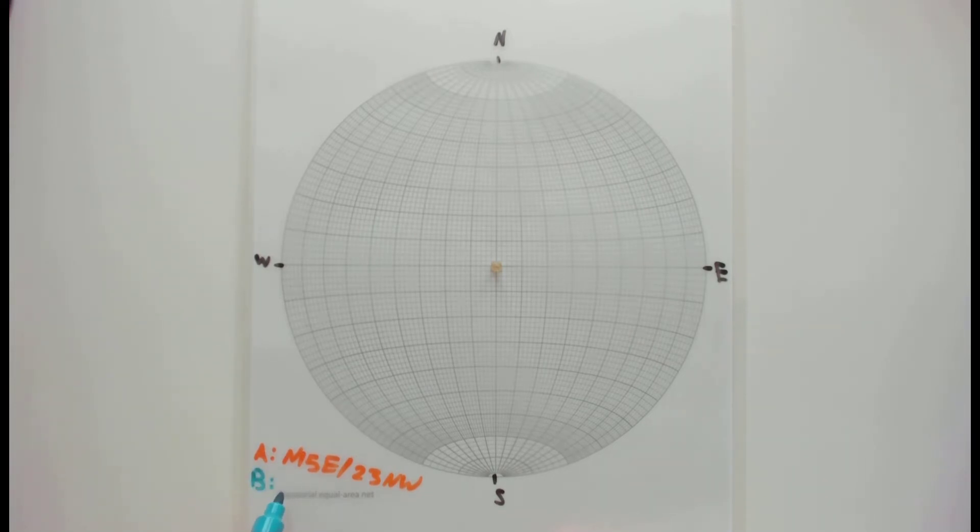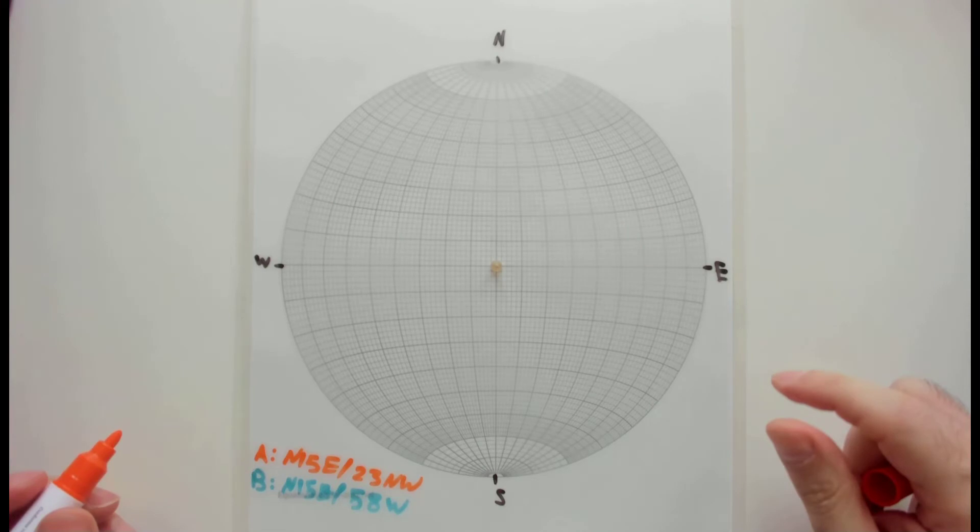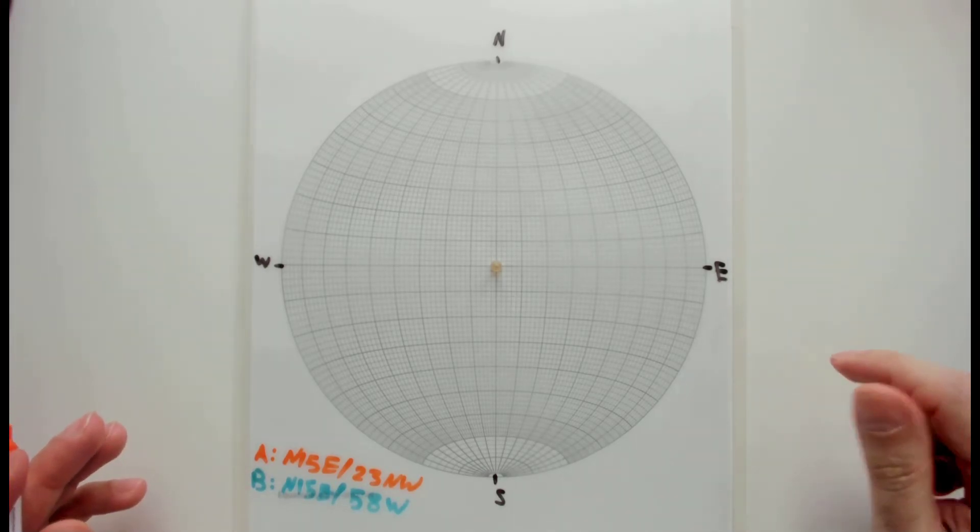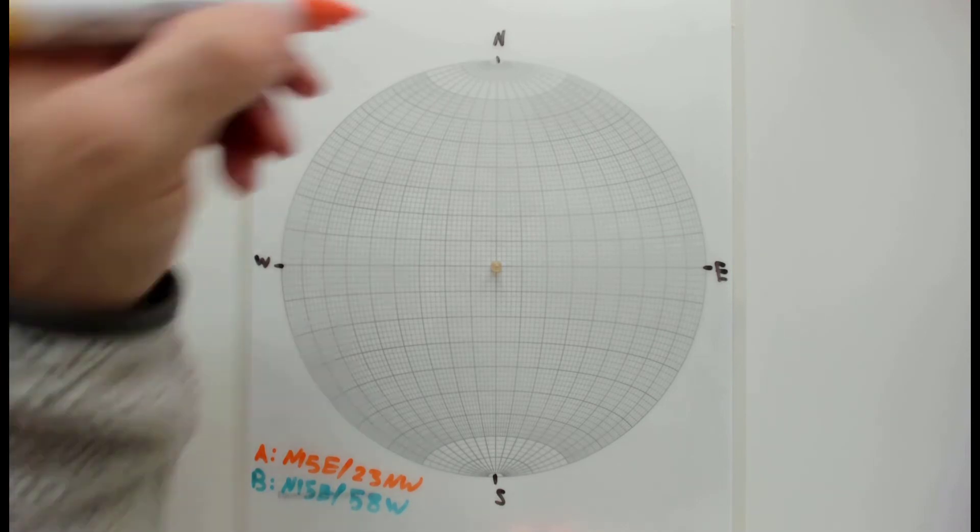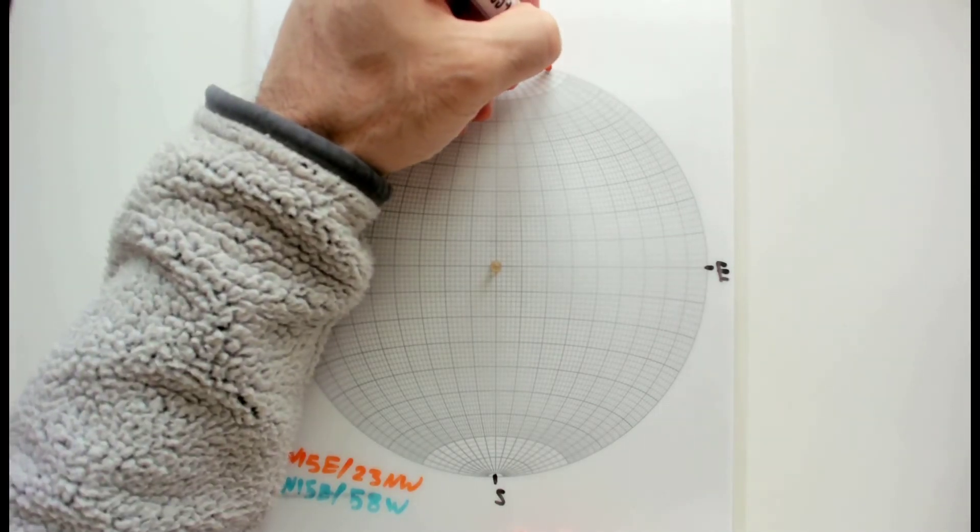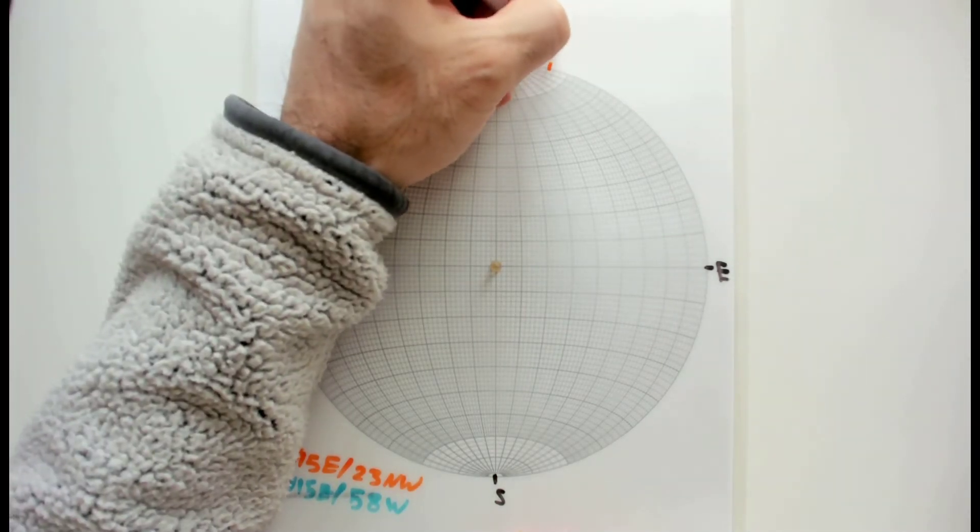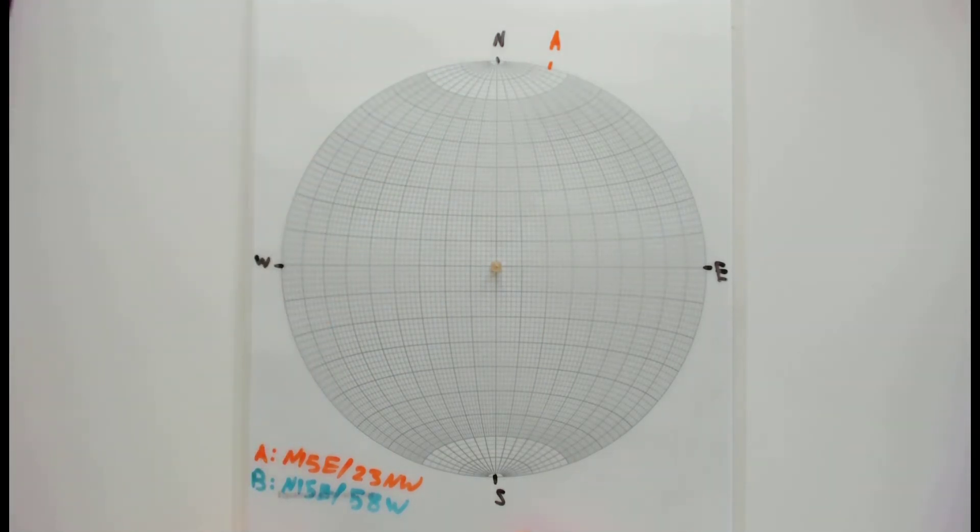It's again the same strike, but it's dipping towards northwest 58 degrees. So let's plot this, but this time I'm going to do it a little bit differently. Rather than plotting the plane and pole, I'm going to do only poles. Let's see how we can do that.